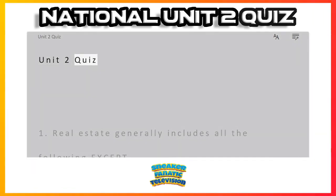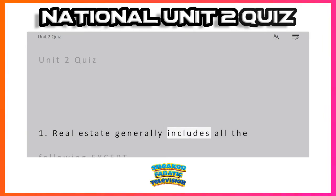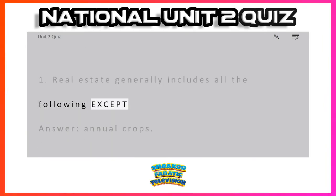Unit 2 Quiz. Question 1: Real estate generally includes all the following except — Answer: annual crops.